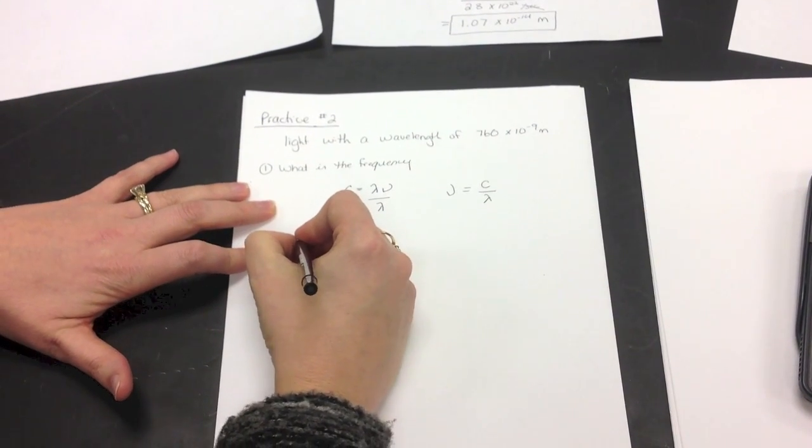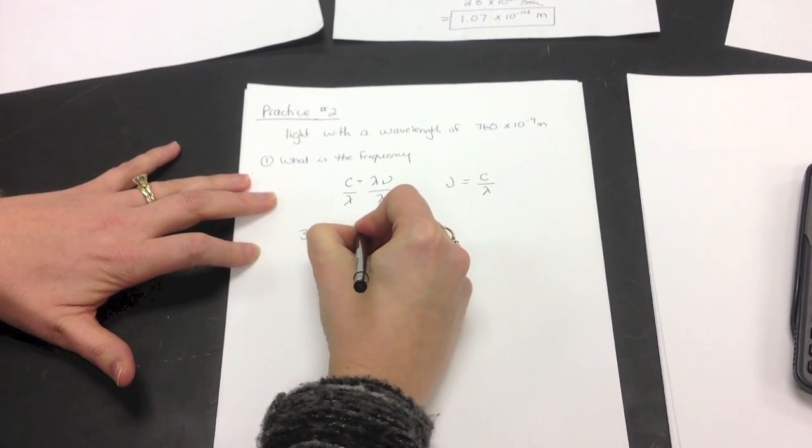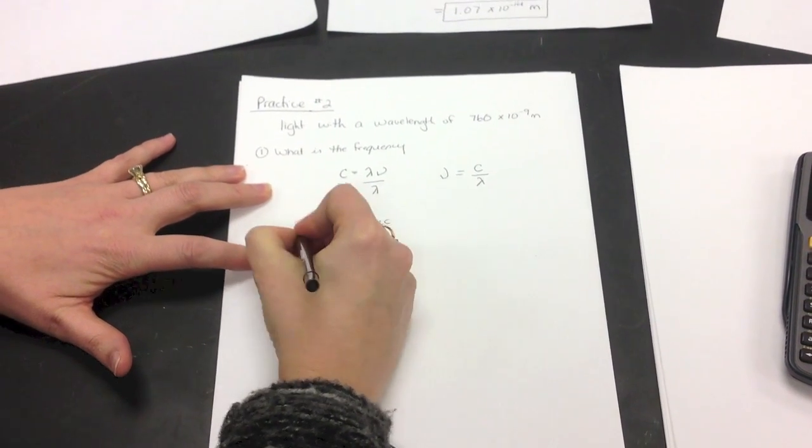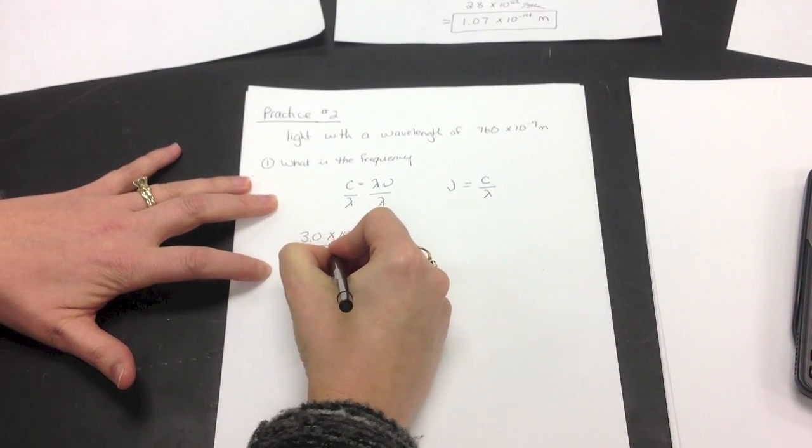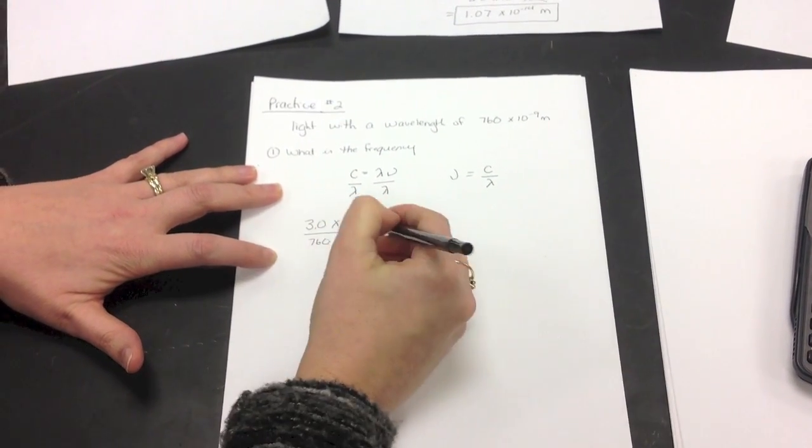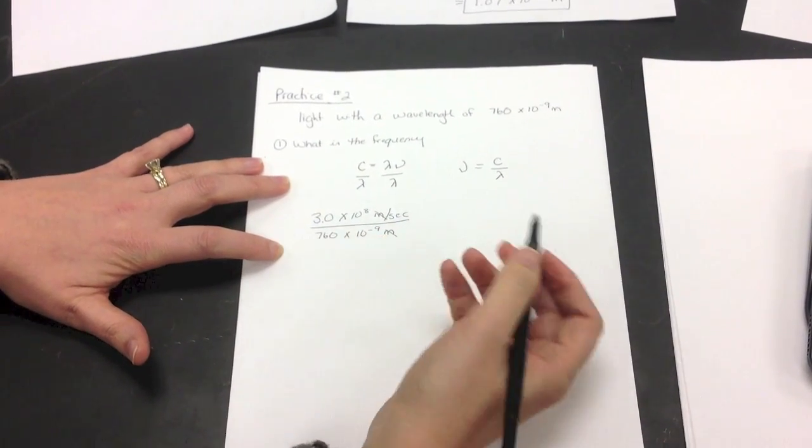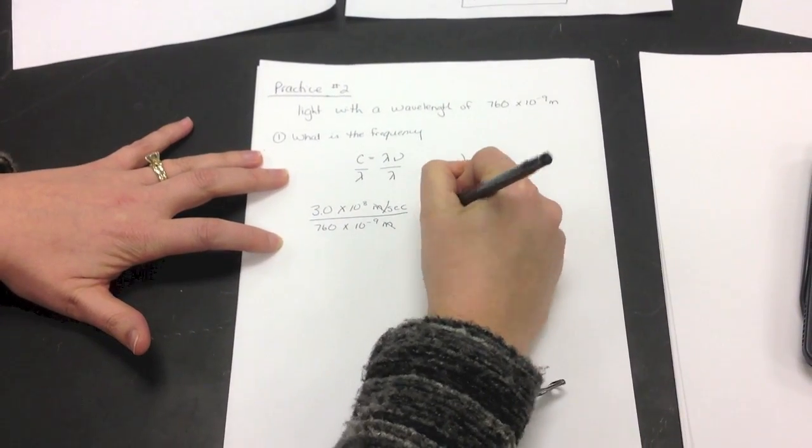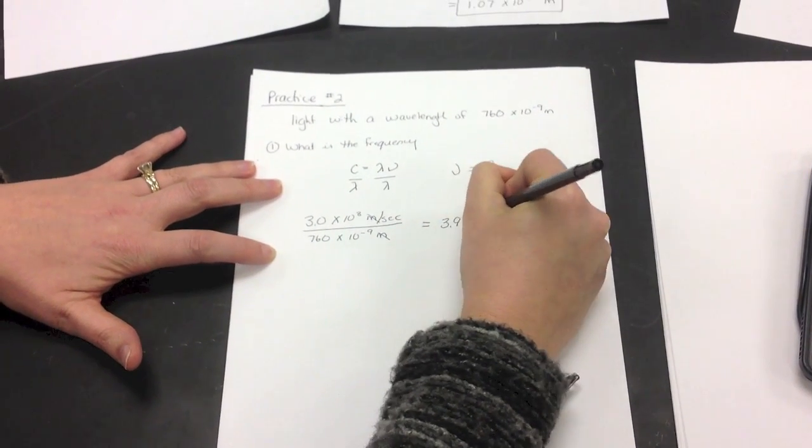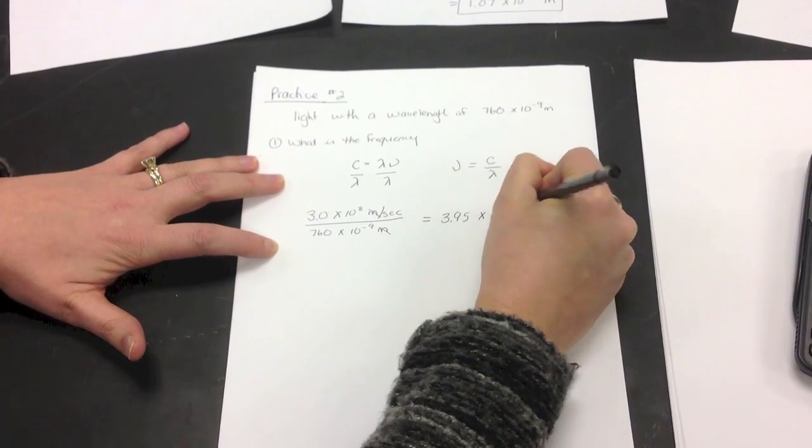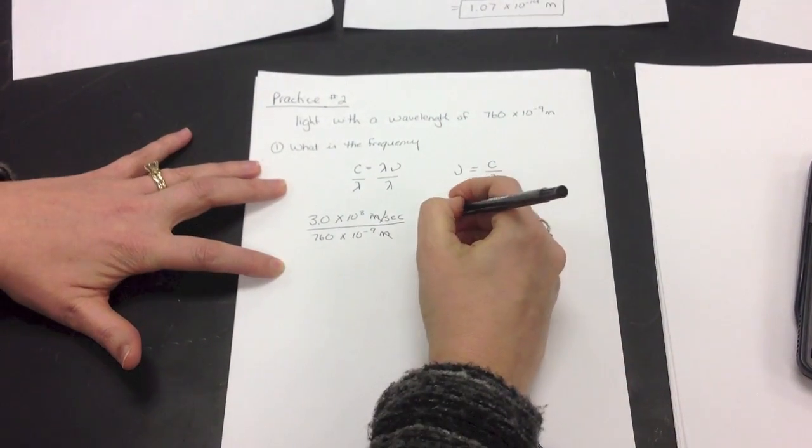C is going to be 3.0 times 10 to the 8th meters per second, divided by our wavelength, which is 760 times 10 to the negative 9th meters. Notice that meters cancel, and you're left with 1 over seconds, which is hertz. When you plug that into your calculator, you get 3.95 times 10 to the 14th hertz, or 1 over second. So that's our frequency.